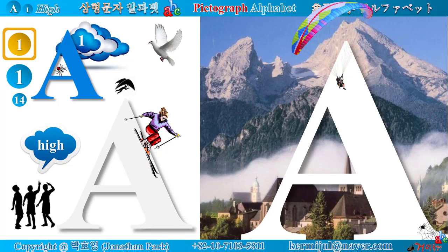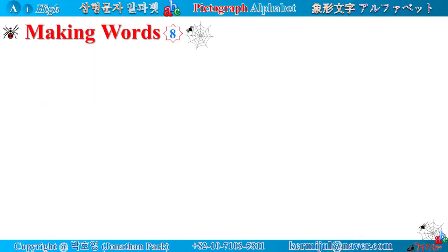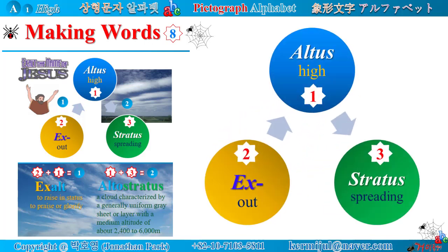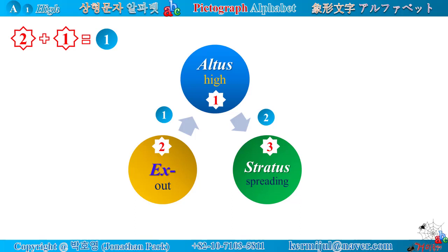Making Words number eight. You can hear three Latin roots: altus, ex, and stratus. Latin root altus means high, prefix ex means out, and stratus means spreading or a layer. Let's check how many words can be coined by using these three Latin roots. Star number two and star number one make a word.